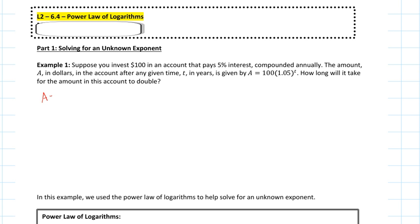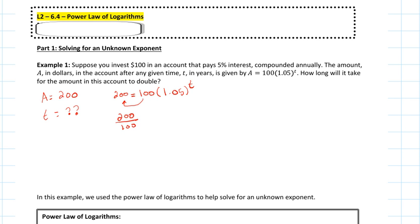The equation is already given, and I'm looking to solve for t when the account is going to double. Originally I have $100 in this account, so for it to double it's going to become $200. So A is equal to $200. That gives us $200 equals $100 times 1.05 to the power of t. I'm going to bring the 100 over, so it becomes 200 over 100 equals 1.05 to the power of t.